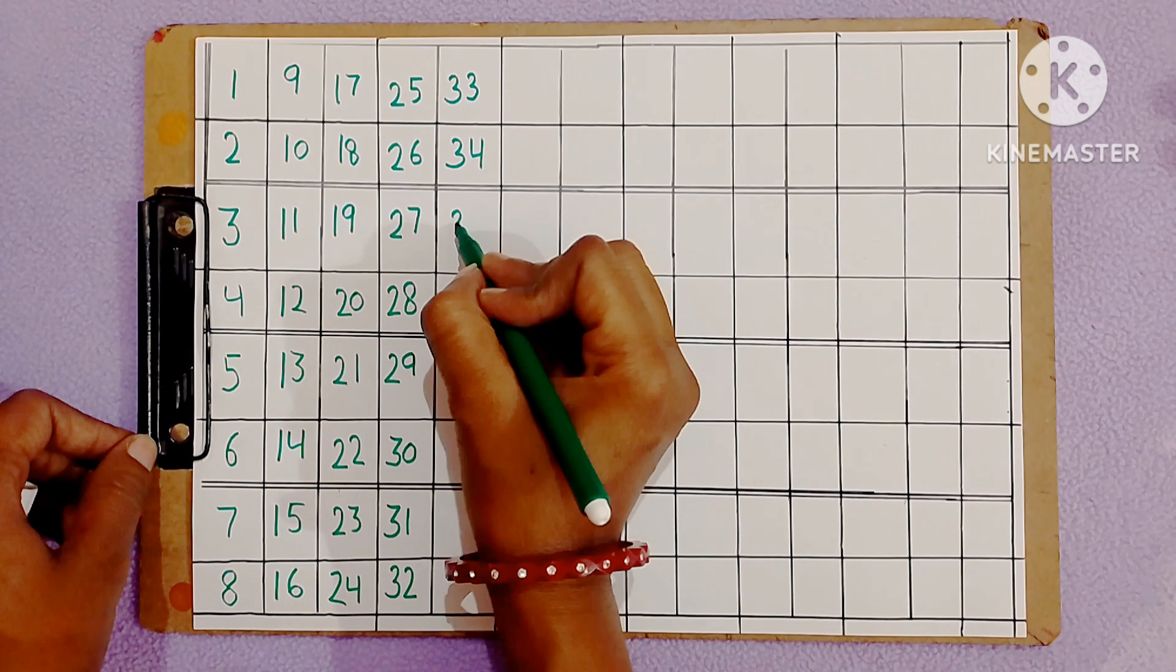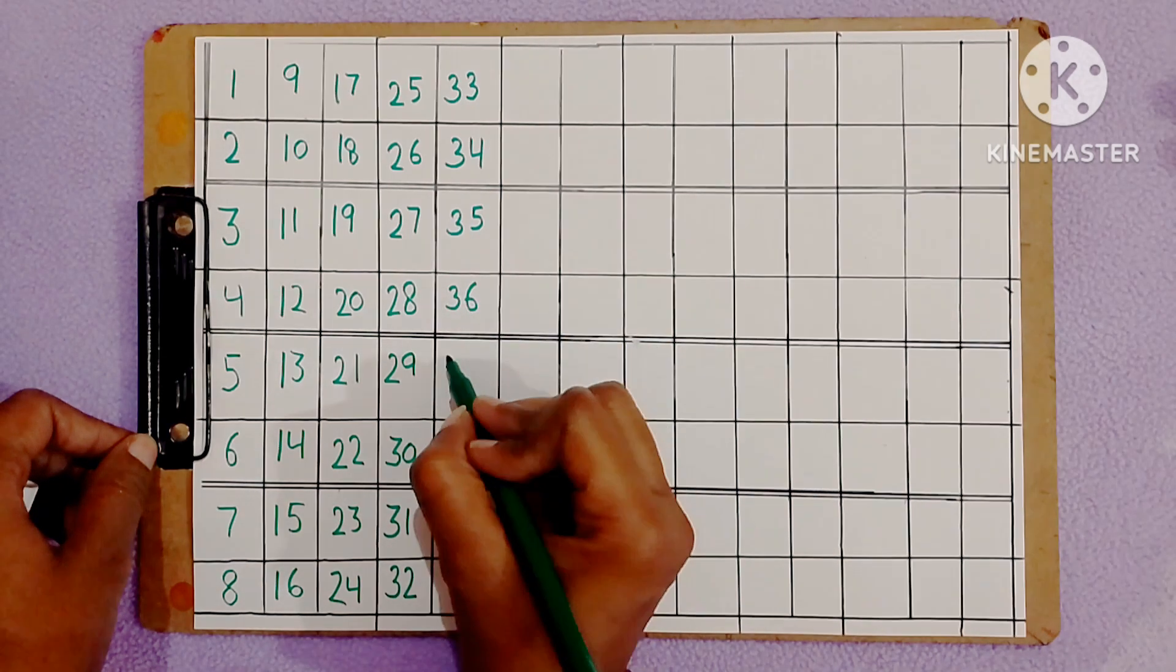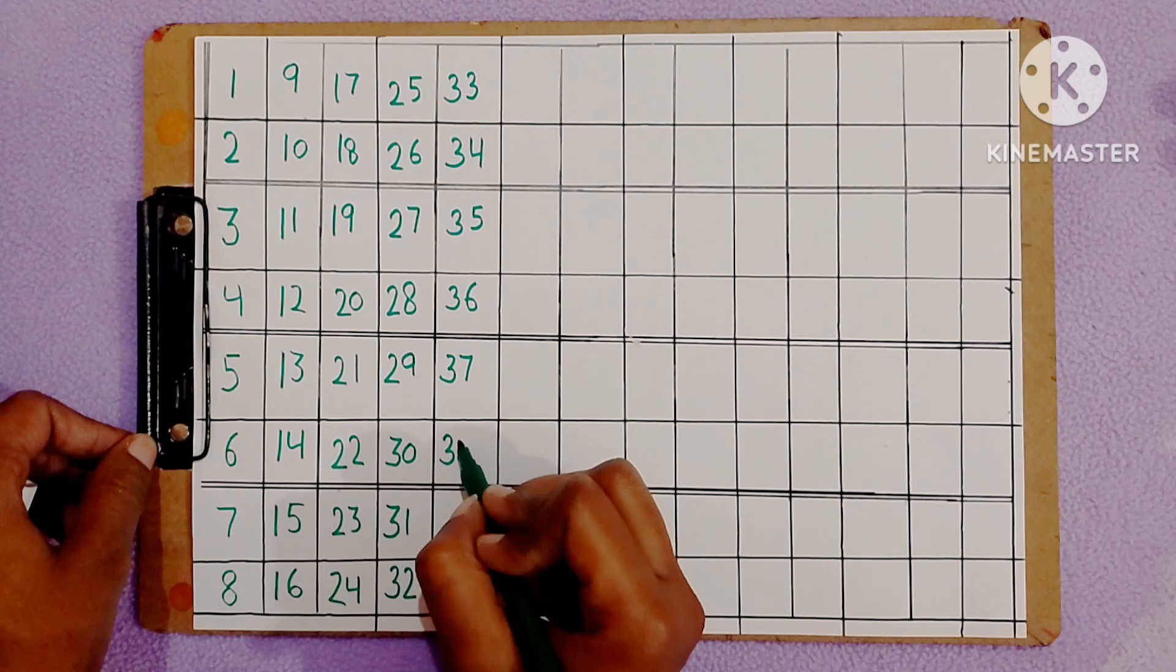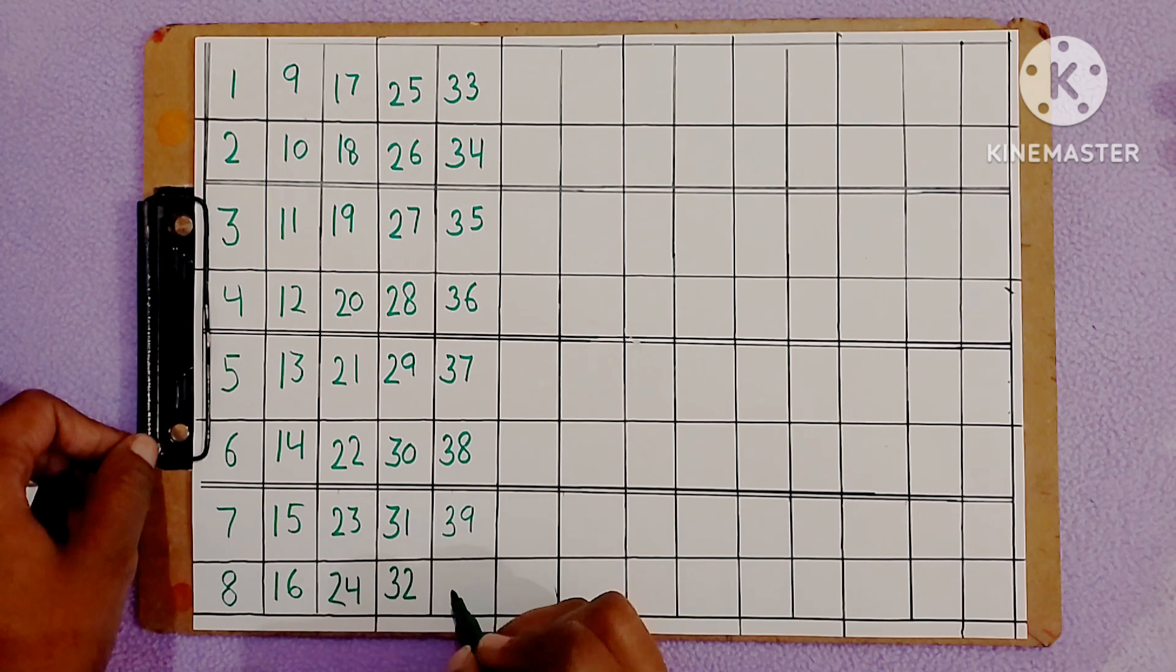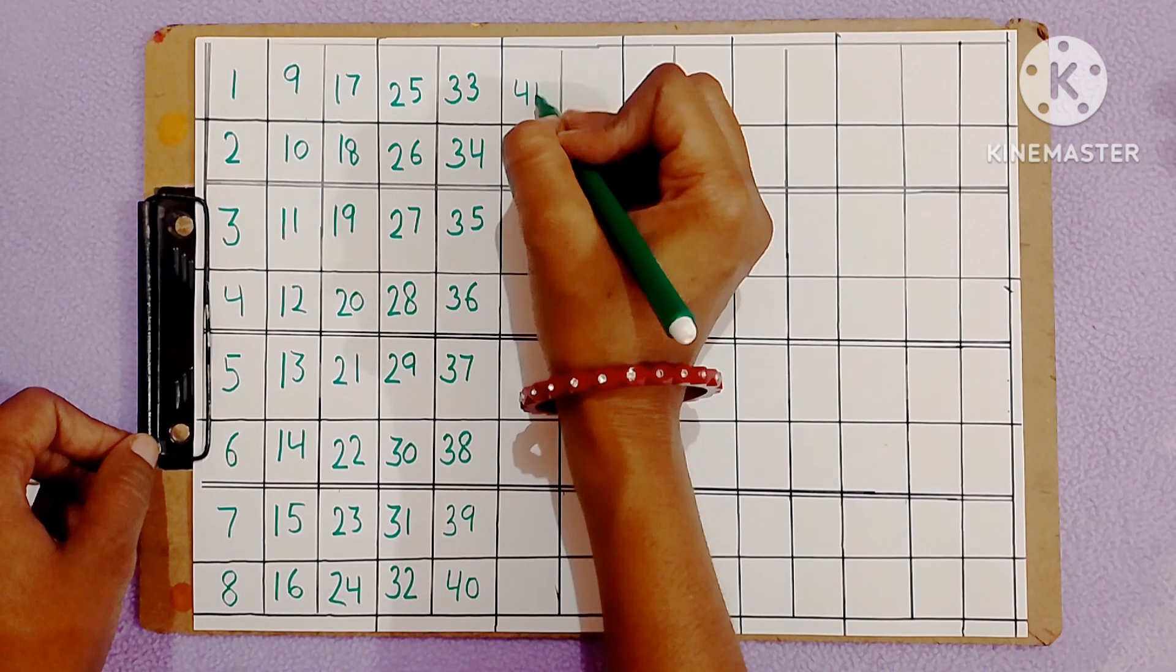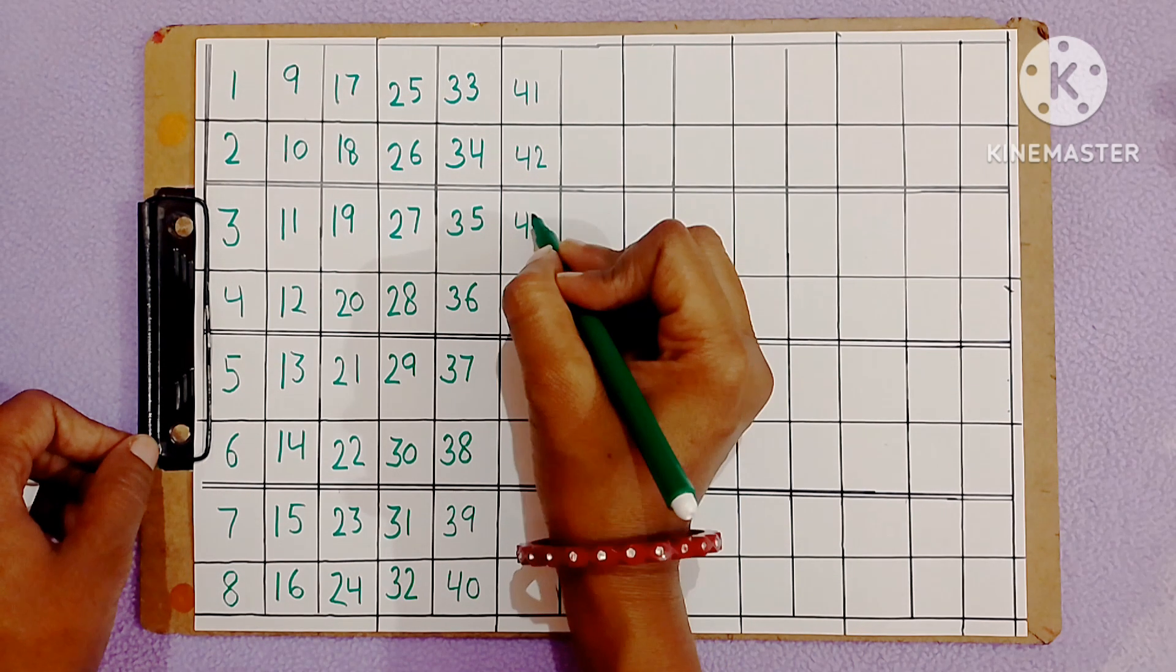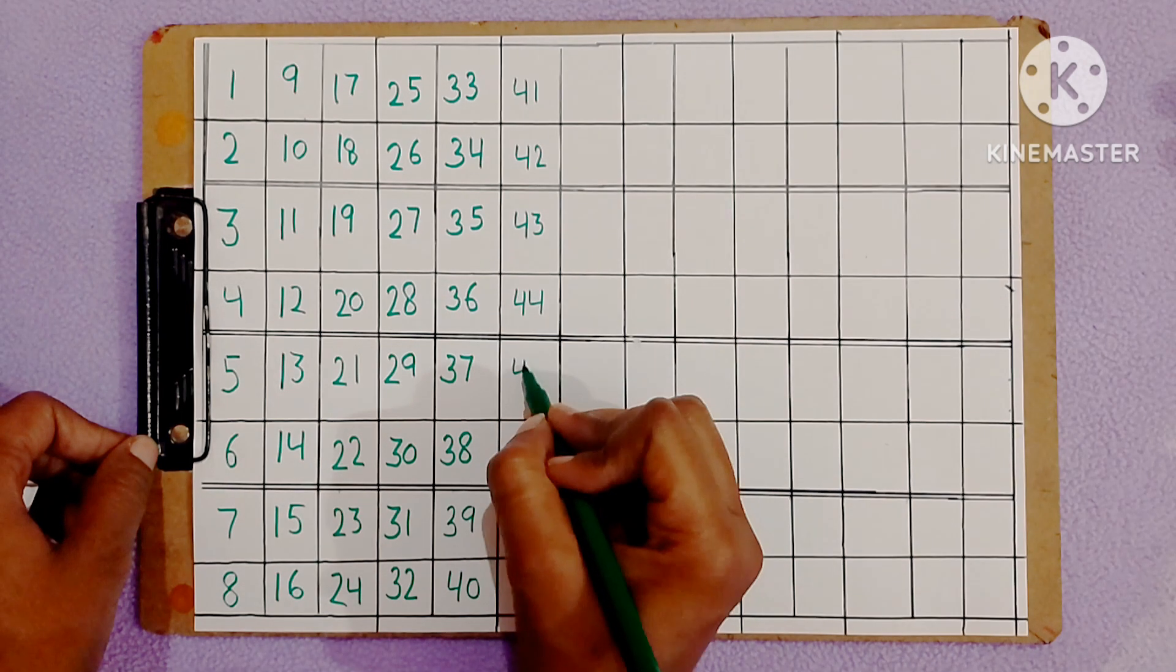Thirty-five, thirty-six, thirty-seven, thirty-eight, thirty-nine, forty, forty-one, forty-two, forty-three, forty-four.